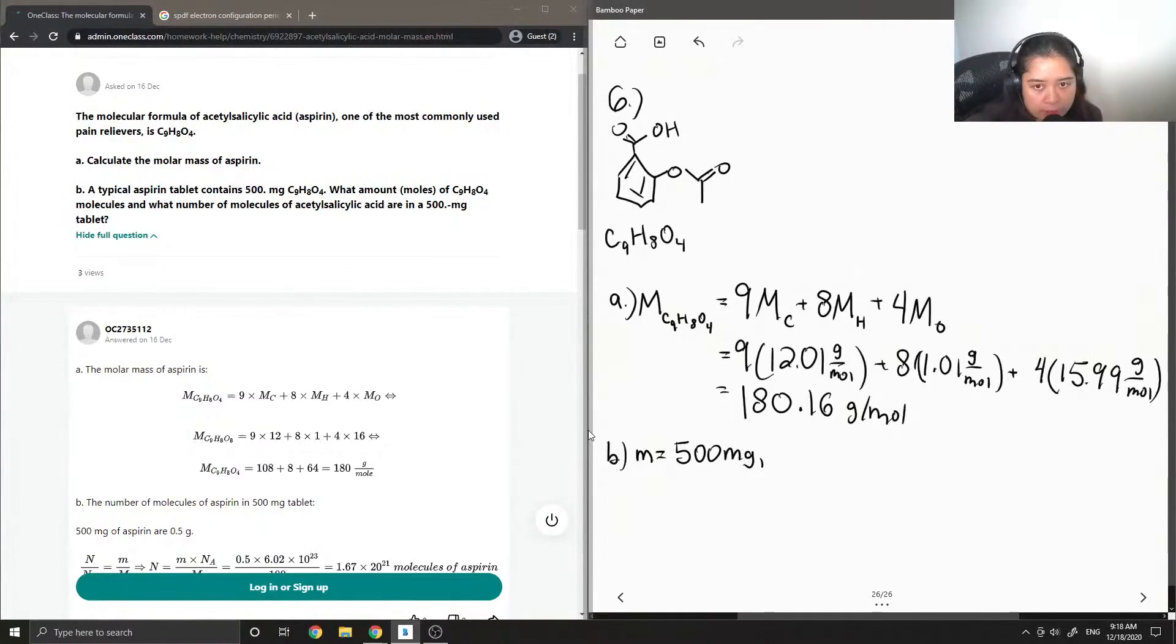Okay, so we know our mass is 500 milligrams. But if we look at the units of our molar mass, it is in grams per mole. So I'm just going to convert the 500 milligrams to grams. So it would be 0.5 grams.